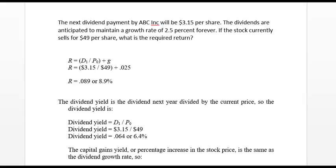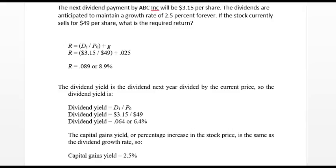The first one we're going to look at is what is the required return when a company sells at a certain stock price. We're looking at the dividend yield and also something called the capital gains yield. The company says the next dividend payment by ABC Inc. will be $3.15 per share. The dividends are anticipated to maintain a growth rate of 2.5% forever. If the stock currently sells for $49 per share, what is the required return?